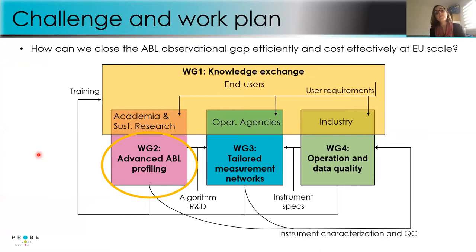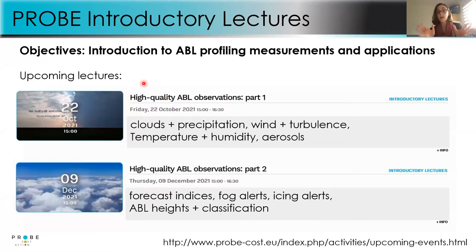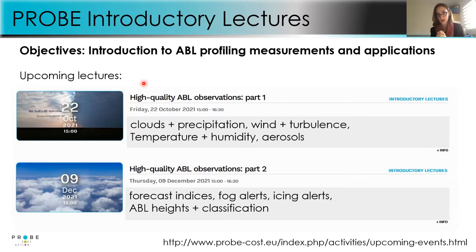Today we will mainly discuss advanced ABL profiling products for end users. This is Part One, covering temperature and humidity profiling, wind and turbulence products, aerosol products, and cloud and precipitation products. Part Two on the 9th of December 2021, from 3 to 4:30 PM Central European Time, will discuss forecasting: fog alerts, icing alerts, and atmospheric boundary layer height and classification. Please save the date.